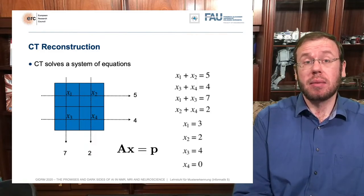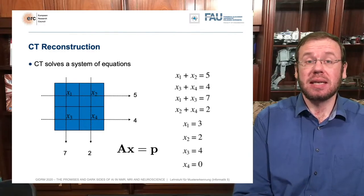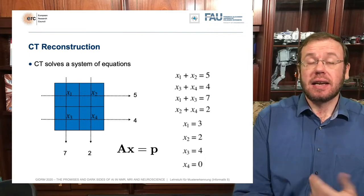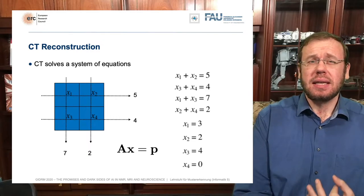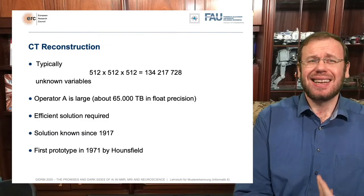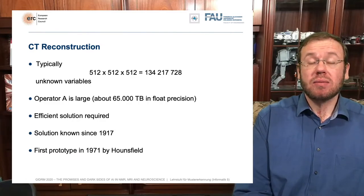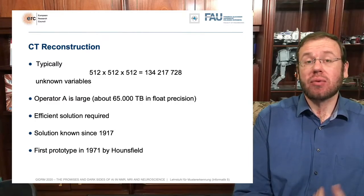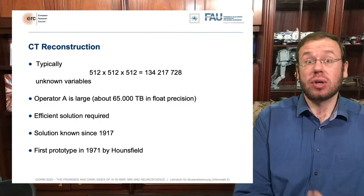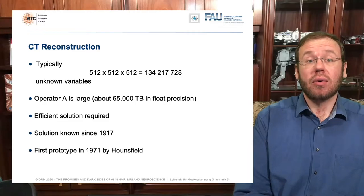In many 3D applications this operator is really large. For a 512-cubed CT volume you have 134 million unknown parameters, meaning the operator is enormous. If you wanted to instantiate A in memory in floating-point precision for a 3D problem, you would easily end up with 65,000 terabytes of memory. Obviously this is infeasible, especially to invert. Fortunately, an efficient solution was known by Johan Radon already since 1917, and has been implemented successfully in practice.